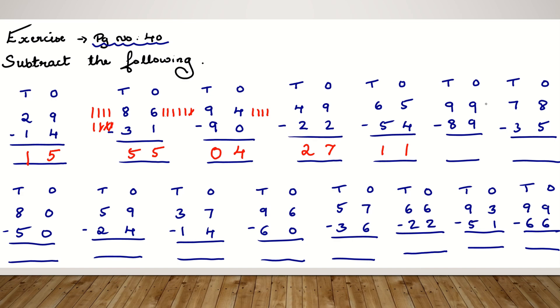So let's start subtracting the next question which is given. 99 minus 89. 9 minus 9 is 0. 9 minus 8 is 1. And the answer is 10.